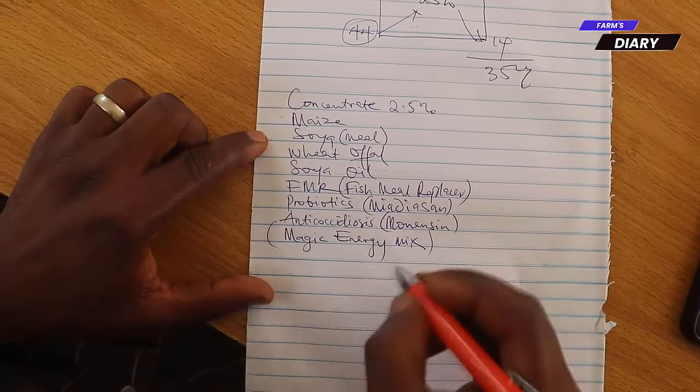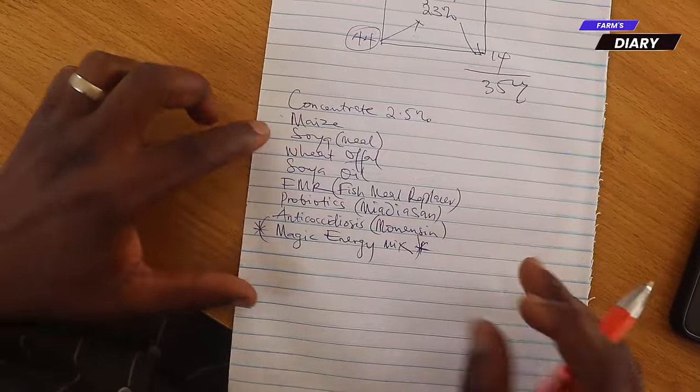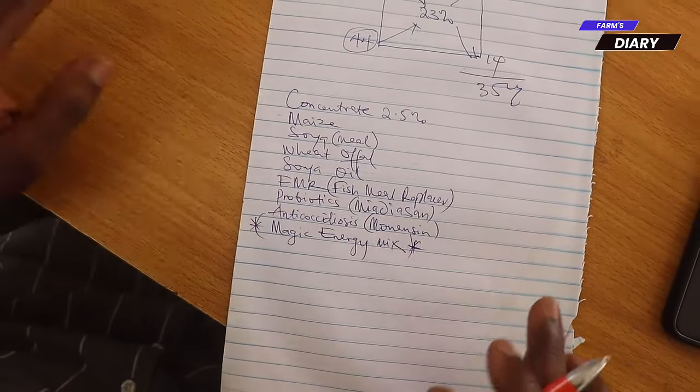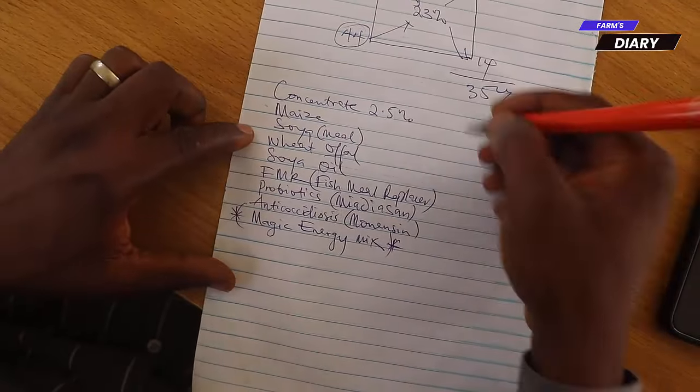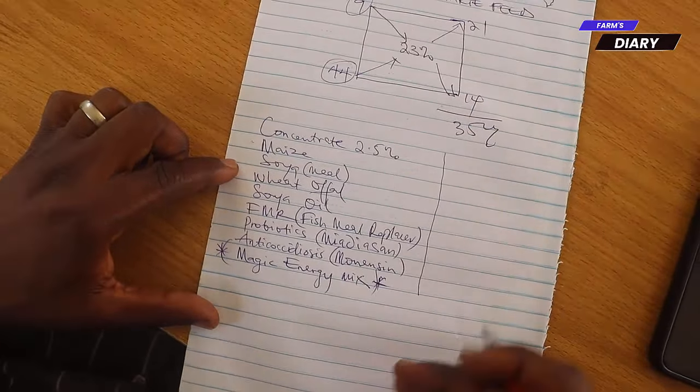And what are we talking about is what we call the magic energy mix. This is a very new, very, very new innovation that, in fact, I've used, and it's very, very, in fact, it's magic. It's magic. So how are we going to go about the composition? These are the basic things we need to compose this feed.